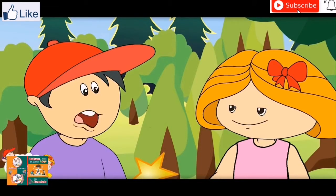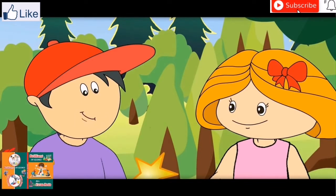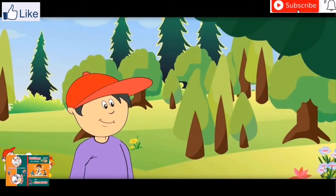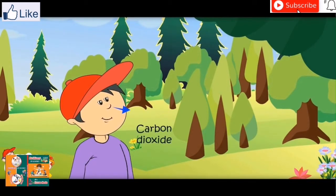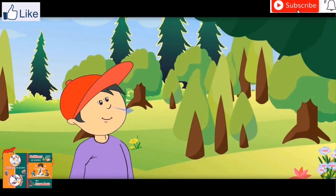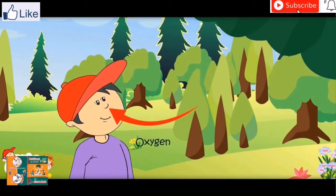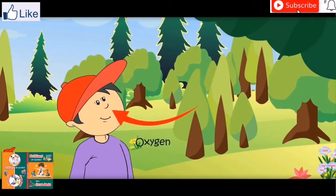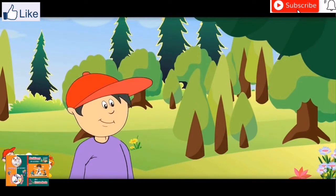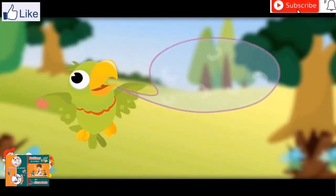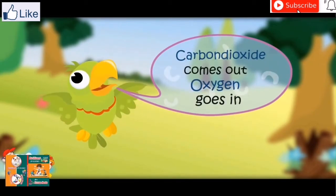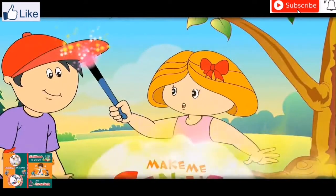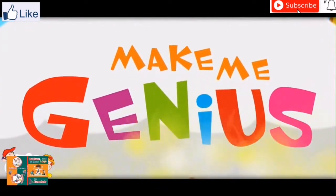I know that dirty air is called carbon dioxide. Yes, let me show you. You see these colors? Blue air is the dirty air coming out of your body, and red air is the clean oxygen going into your body. Carbon dioxide comes out, oxygen goes in.